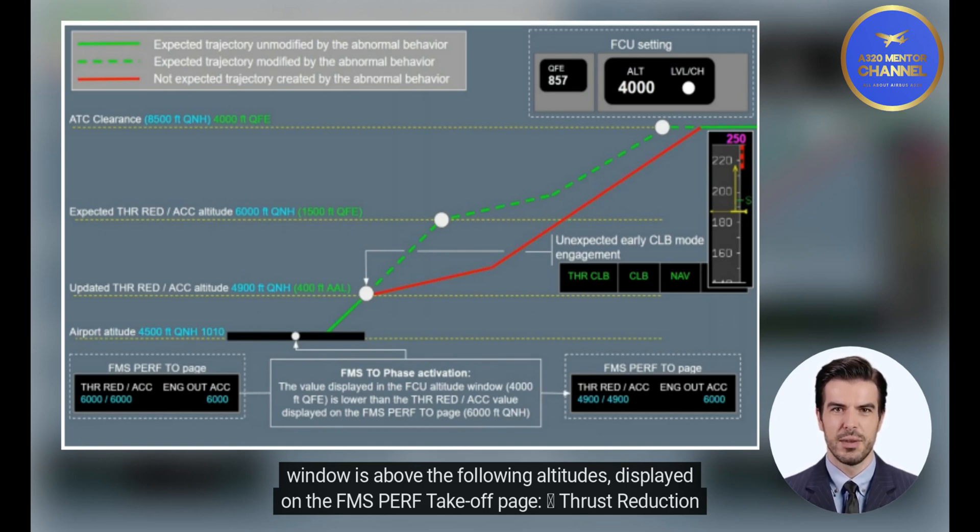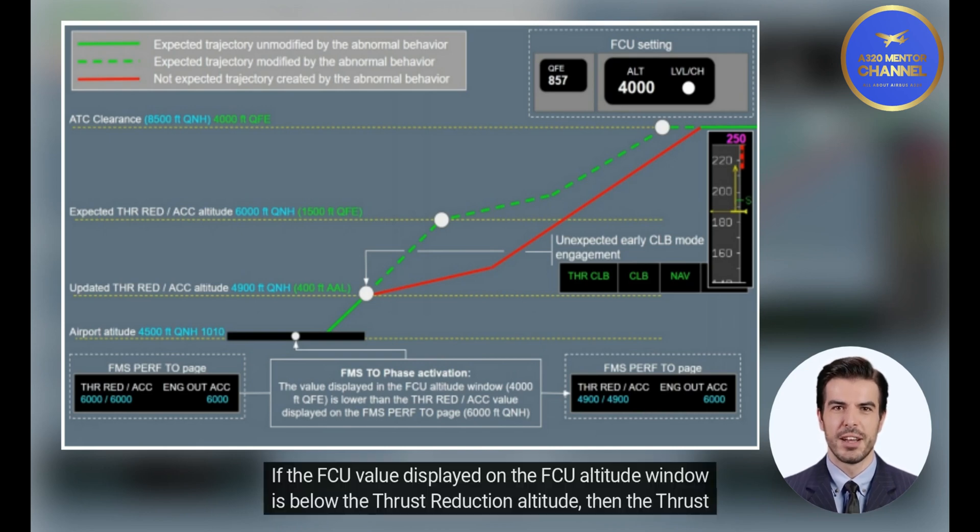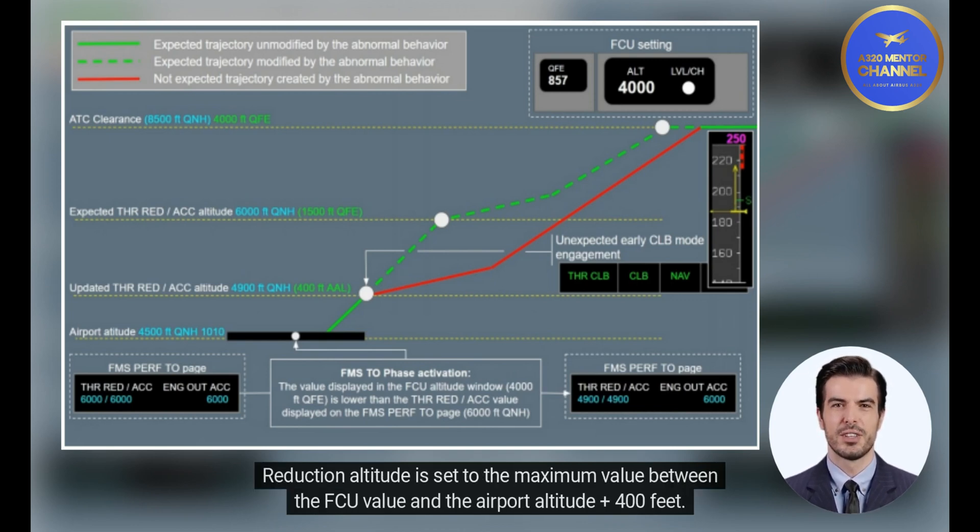Displayed on the FMS perf takeoff page: thrust reduction altitude and acceleration altitude. If the FCU value displayed on the FCU altitude window is below the thrust reduction altitude, then the thrust reduction altitude is set to the maximum value between the FCU value and the airport altitude plus 400 feet.